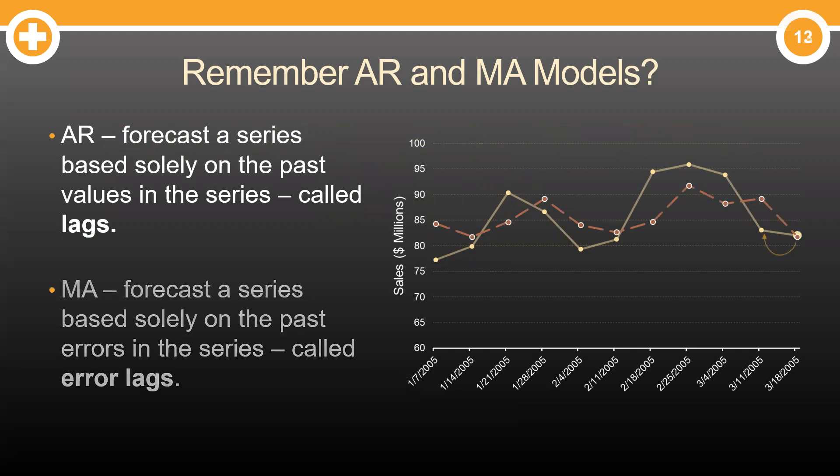So what are these models? Remember, AR models forecast a series based solely on the past values of the series. These are called lags. MA models, on the other hand, forecast a series on past values of the errors in the series. These are called error lags. Remember? Good. Let's remember some more.